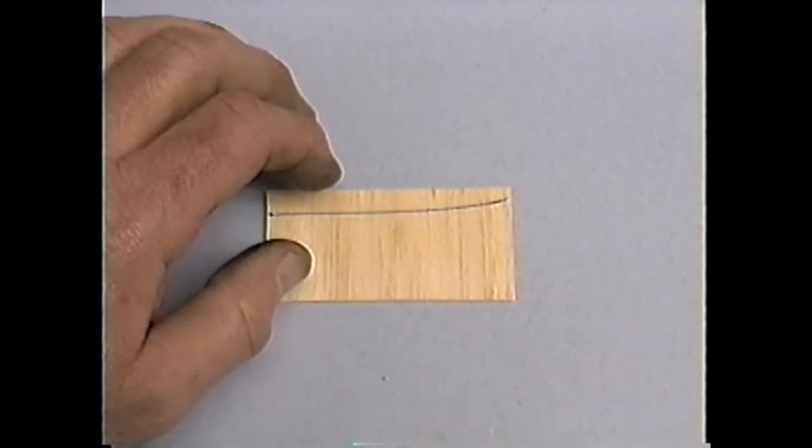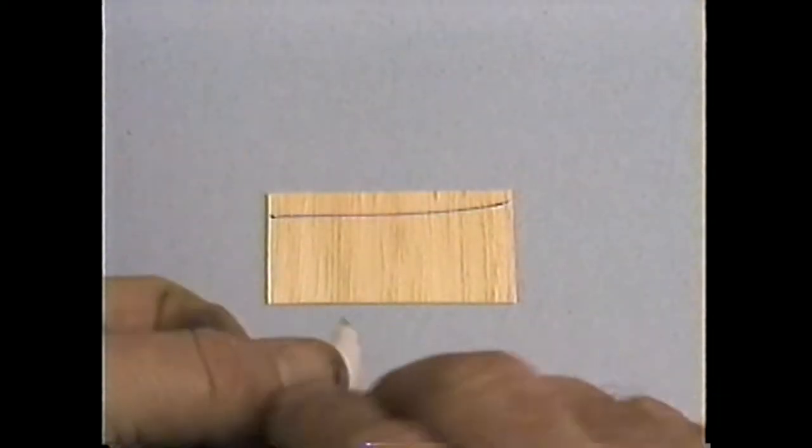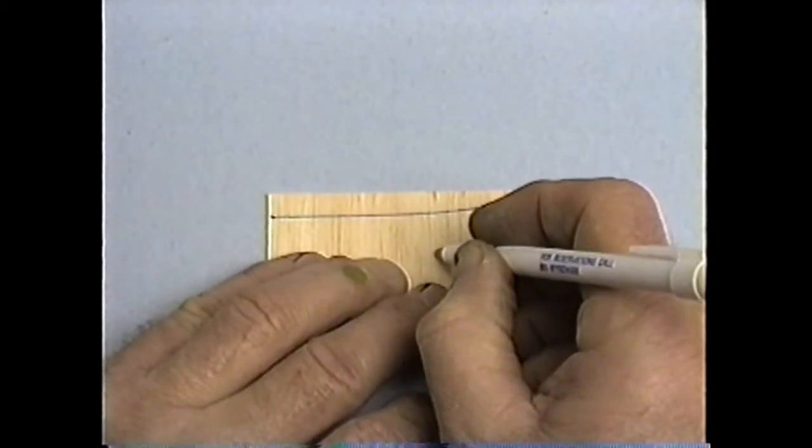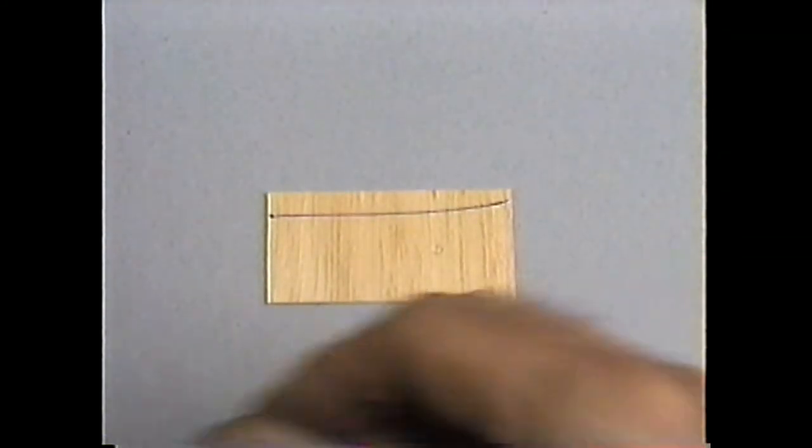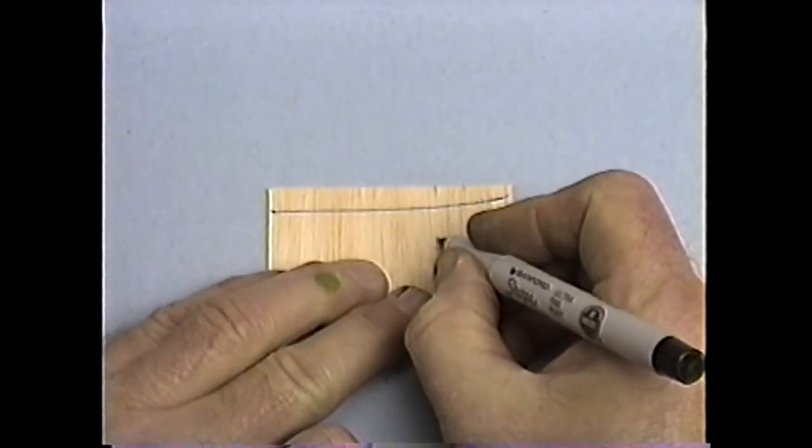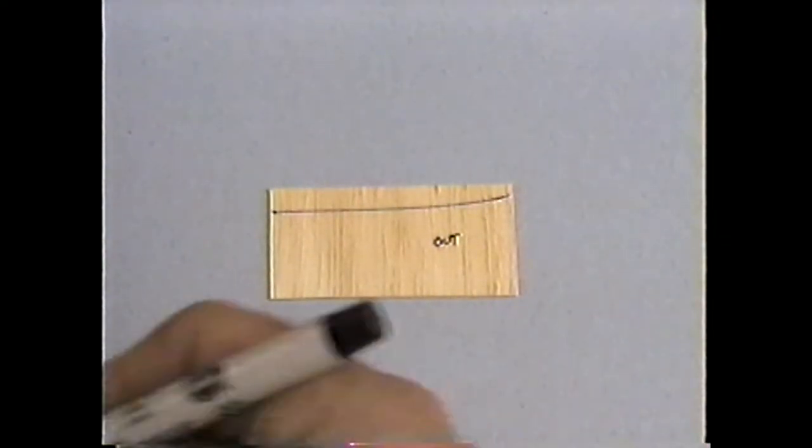Now I have a pattern for the side. So first thing I want to do is mark which is the inside, which is the outside. This will be the outside. Because I don't want to get these interchanged.